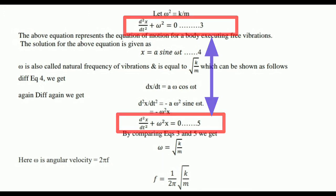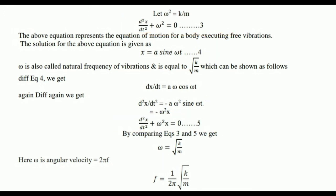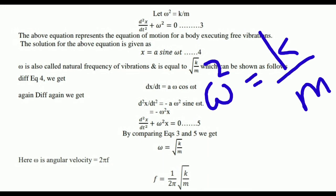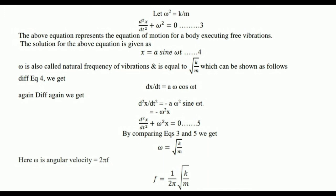Differentiating equation 4 gives dx/dt = Aω cos(ωt), and differentiating again gives d²x/dt² = −Aω² sin(ωt) = −ω²x. Comparing with equation 3, we cancel common terms and get ω² = k/m, therefore ω = √(k/m). This angular frequency ω is the natural frequency of vibration for a body executing free or undamped oscillations.